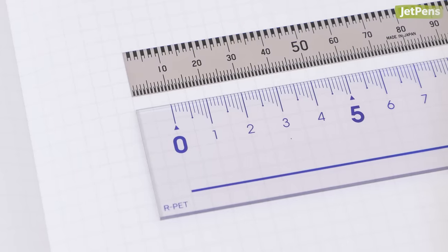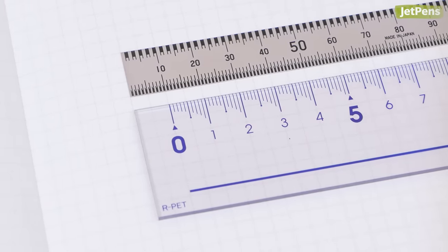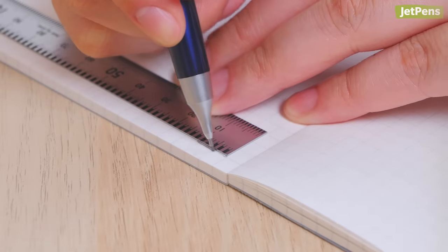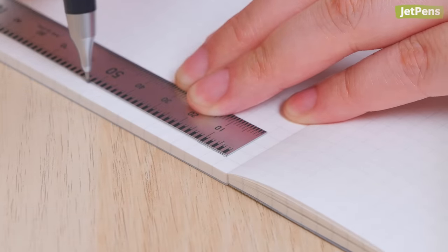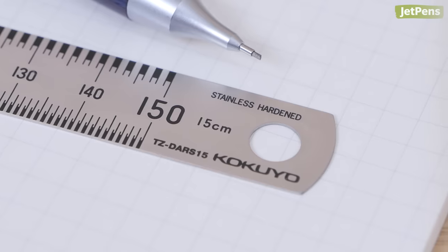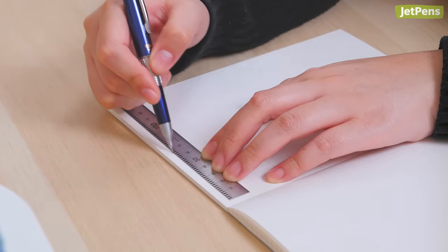Plus, unlike most rulers, the zero mark starts at the very edge, so you don't have to account for an extra gap between the start of the measurement marks and the end of the ruler. The TrueMeasure is also made of stainless steel, so it doesn't feel flimsy in the hand.